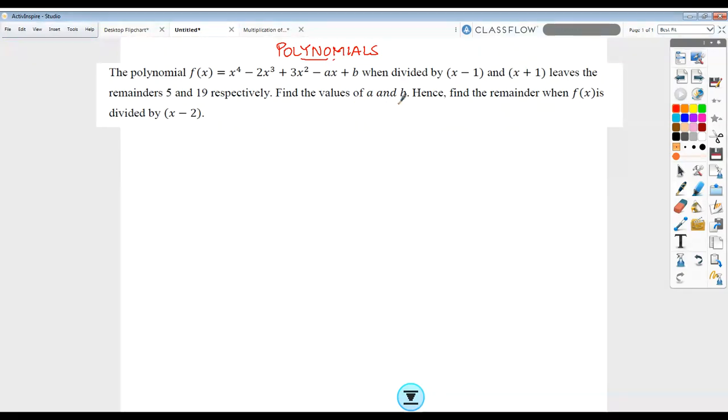Find the values of a and b, hence find the remainder when f(x) is divided by (x - 2). Let's use the remainder theorem here to directly reach 5 and 19.